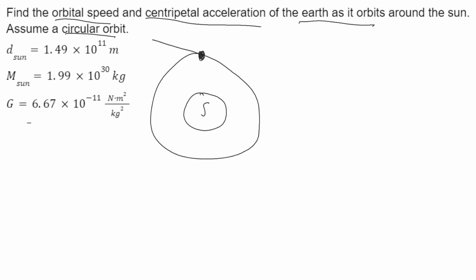The Earth will have a velocity that'll be tangent to the circle — this will be v, and we're solving for this. It'll also have a centripetal acceleration that'll point inward. This will be AC, which is also what we're solving for.